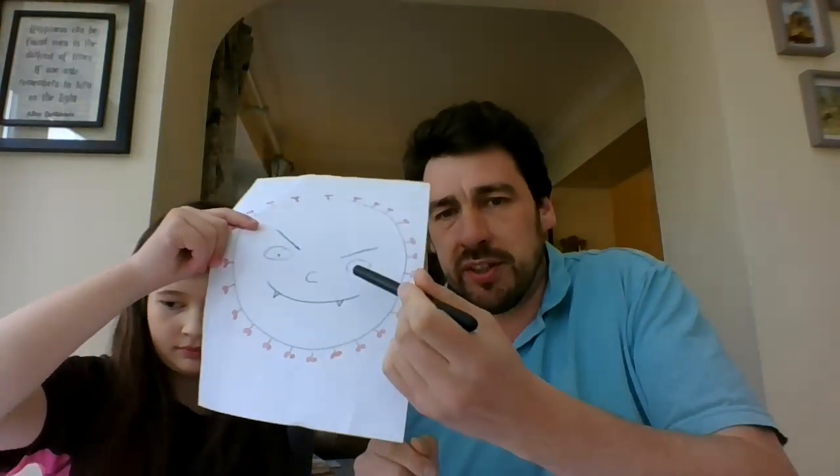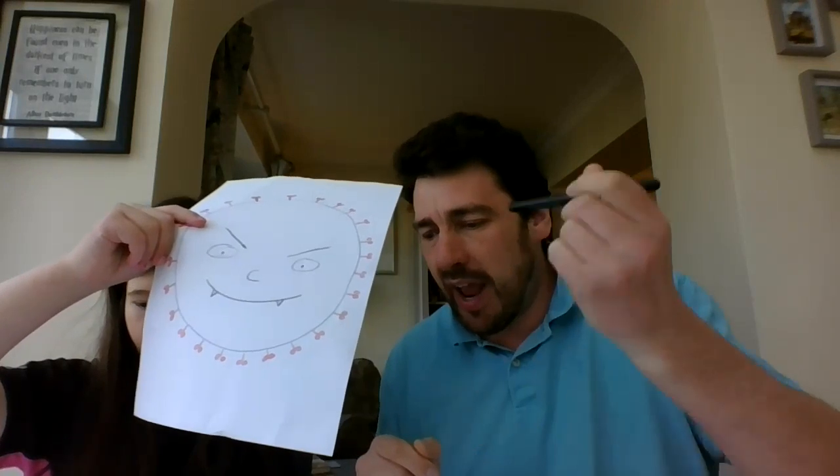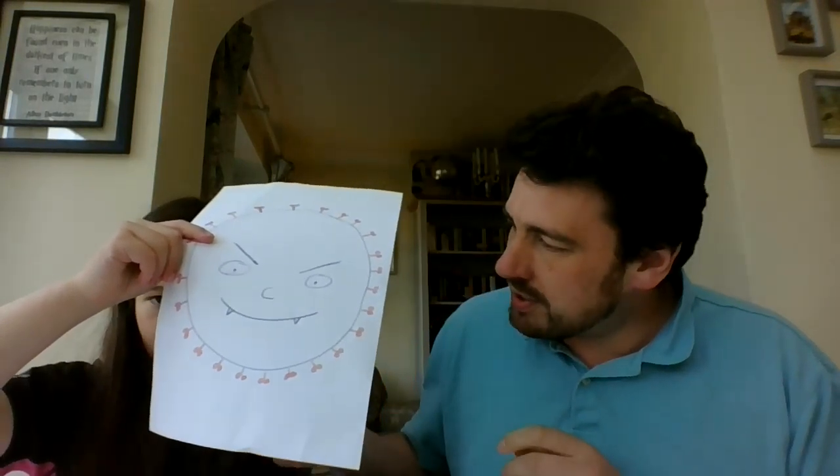It starts in the throat and slowly works its way down into your lungs. Those spikes we saw on the outside of the virus — those red spikes — that's what it uses to attach itself and get into the cells in your throat. Then it starts to move down into your lungs, which is why it gets more difficult to breathe.